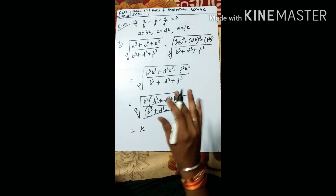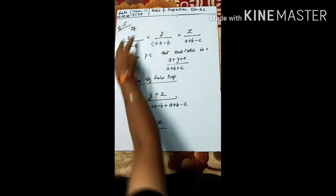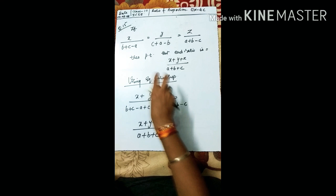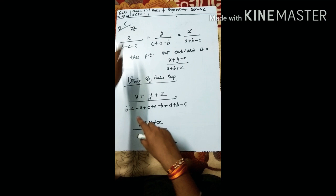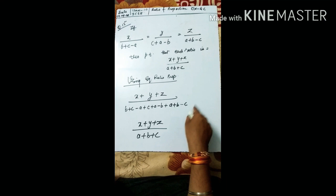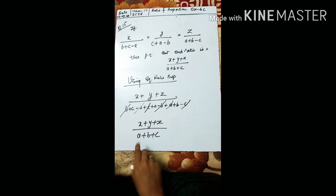The 15th question: given x/(b+c-a) = y/(c+a-b) = z/(a+b-c), prove that each ratio equals (x+y+z)/(a+b+c). This uses the equivalent ratio property — add all numerators and all denominators. The sum of denominators: (b+c-a) + (c+a-b) + (a+b-c). The a's, b's, and c's cancel in pairs, leaving a + b + c. Hence proved.